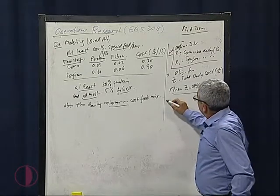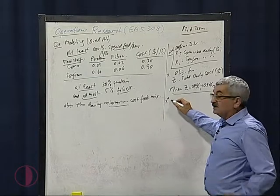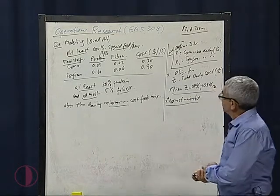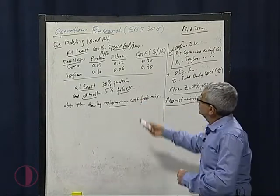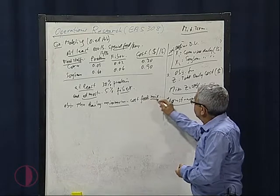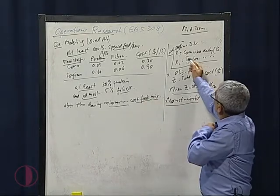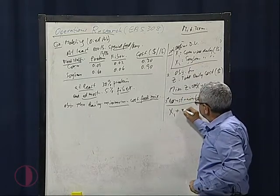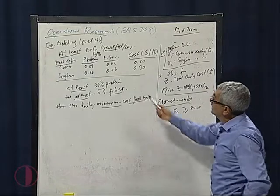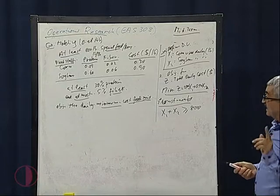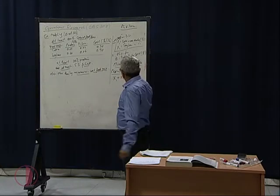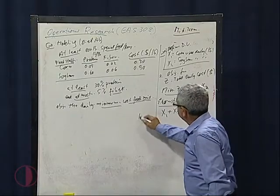Third, we define the constraints. The special feed constraint says the total mix x1 plus x2 must be greater than or equal to 800, since at least that amount is needed daily. Be careful — don't make it less than or equal to, because that would allow zero. It should be at least 800.